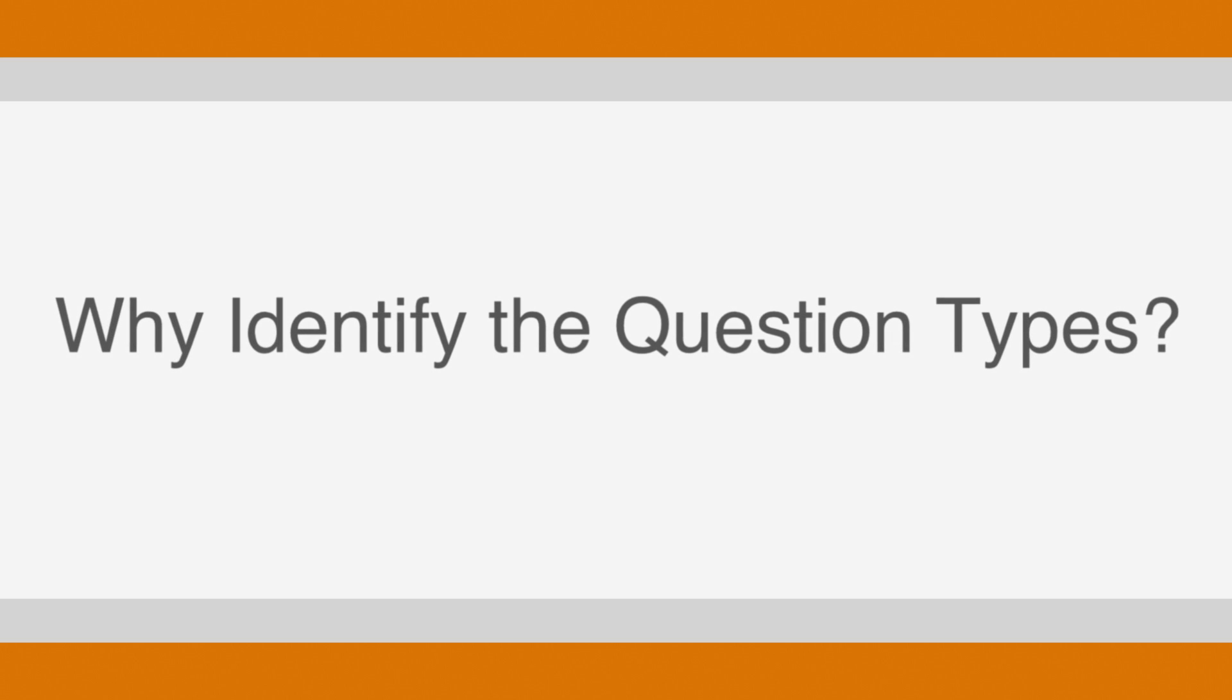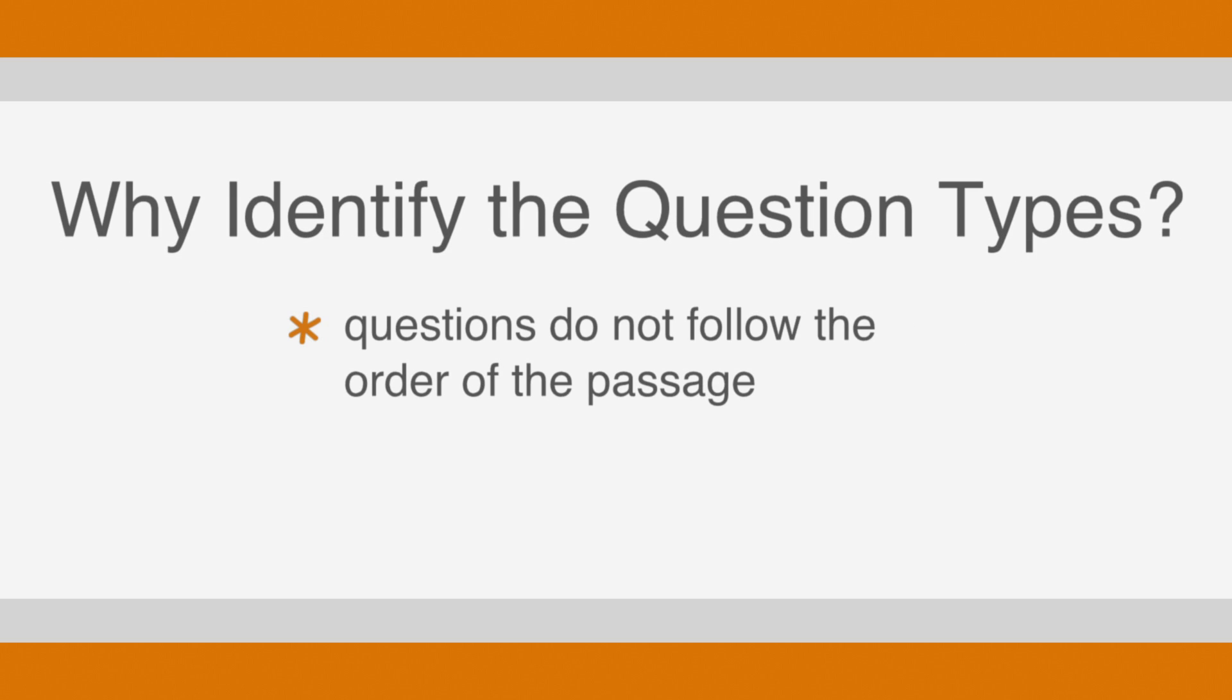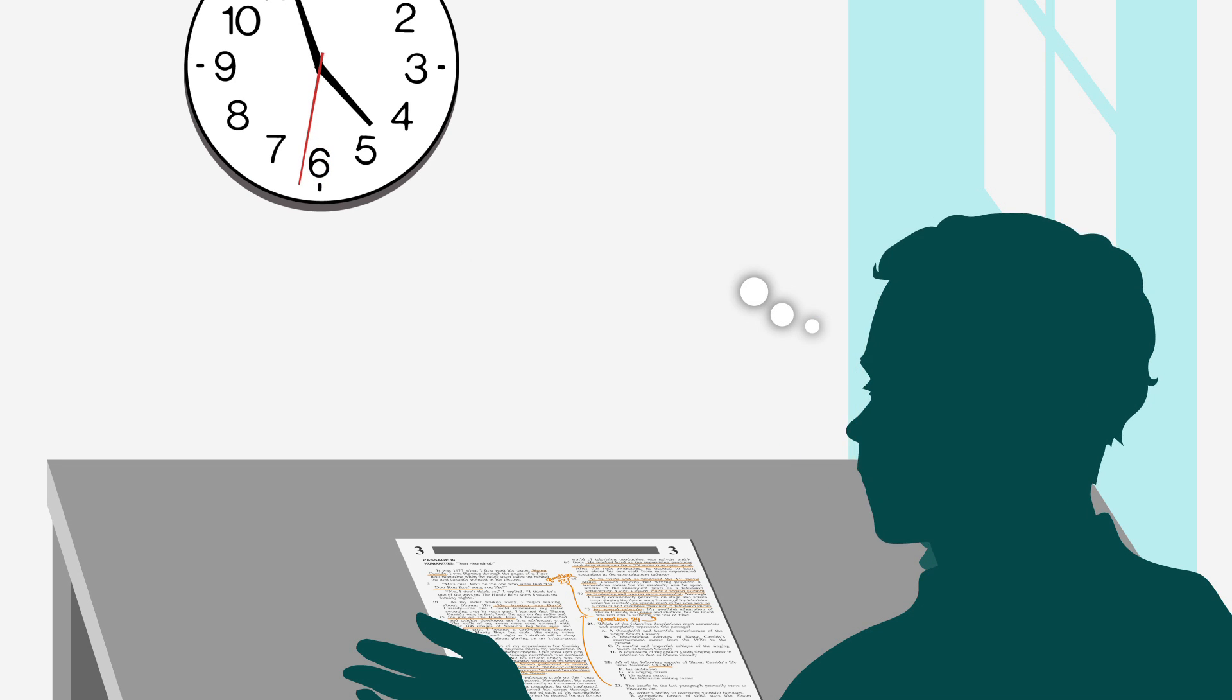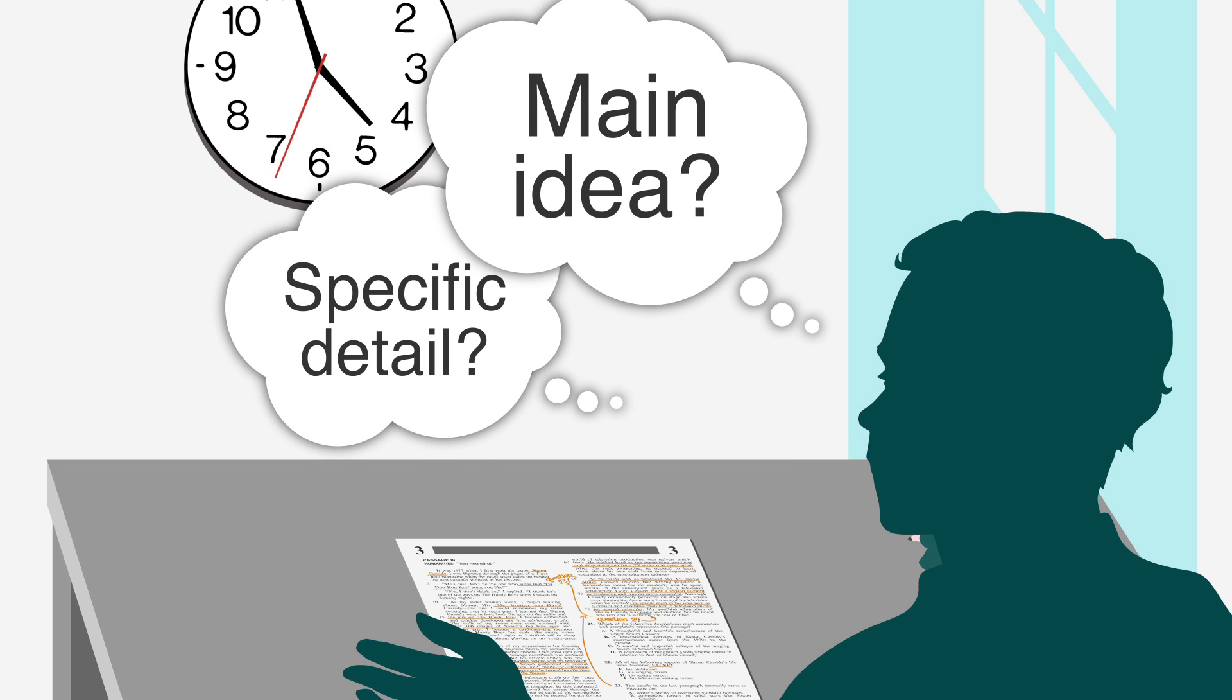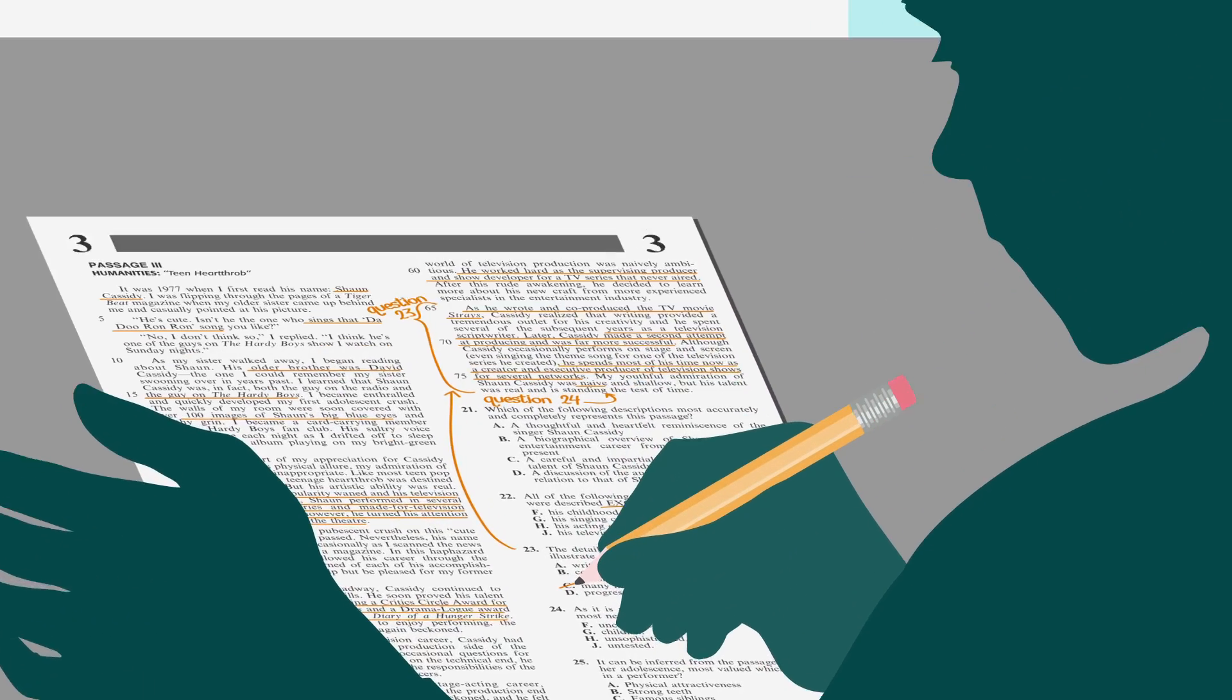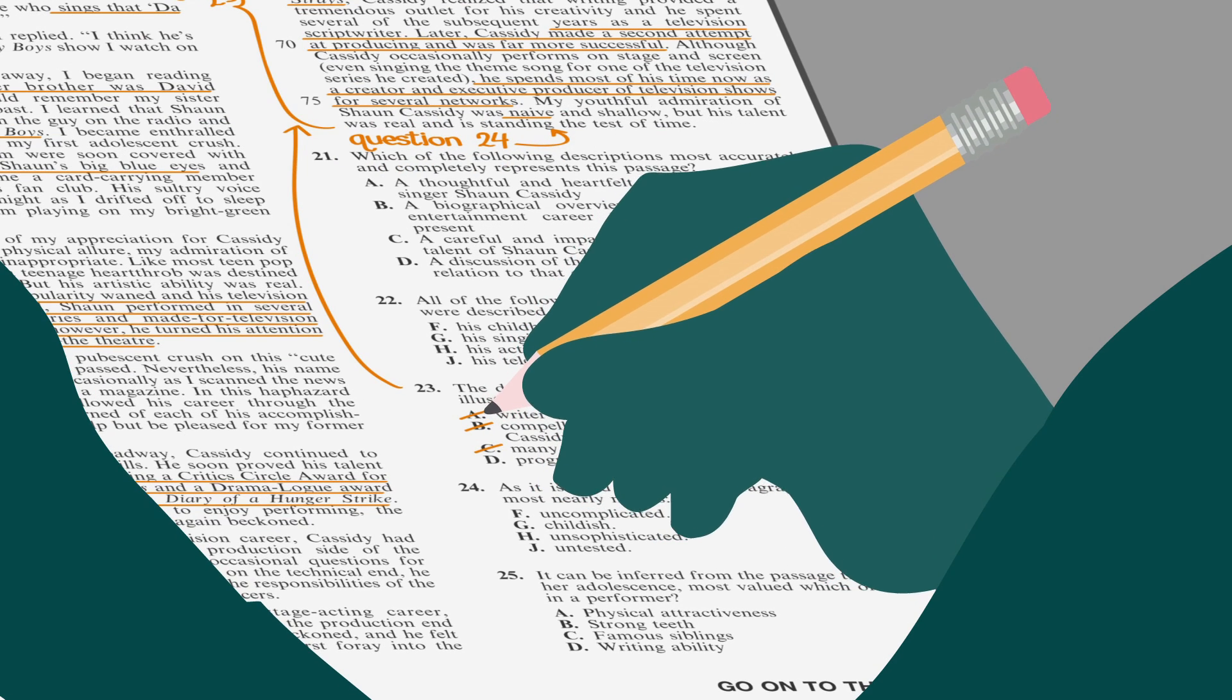Identifying the question types is important for two main reasons. The first is that the questions for the reading passages do not follow the order of the passage. The second is that time is always going to be an issue. The majority of the questions that you'll see in this section are going to be either main idea or specific detail questions. Being able to differentiate between these two types of questions is critical to your time management because you'll be able to eliminate many of the wrong answer choices.